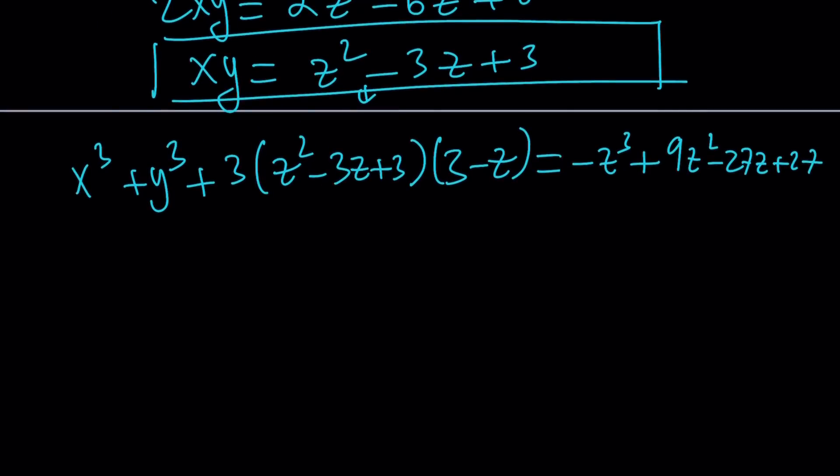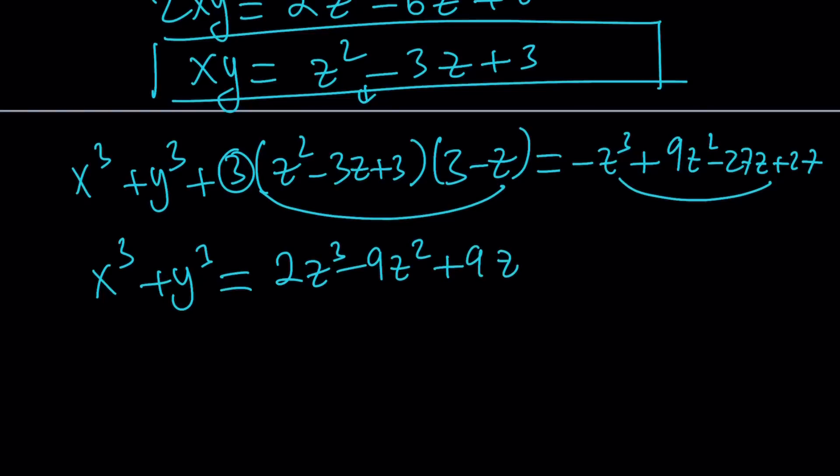What do we find from here? x cubed plus y cubed. To keep a long story short, you're going to distribute these, put it on the right hand side, divide by 3, and so forth. Eventually, you're going to get x cubed plus y cubed equals 2z cubed minus 9z squared plus 9z. This is x cubed plus y cubed in terms of z. Since we don't know the value of z, we can't find it numerically, but we have an idea what that looks like.